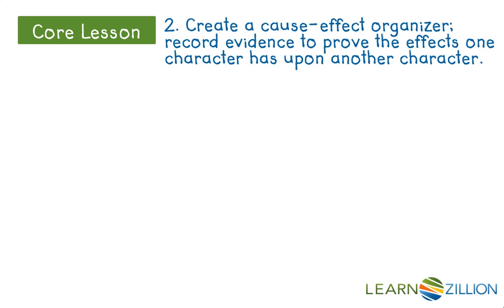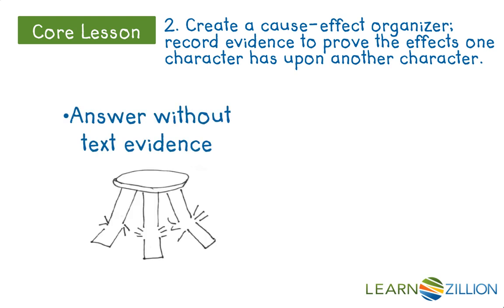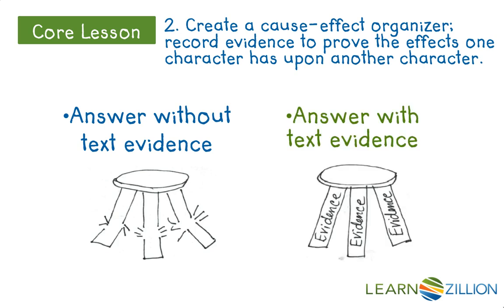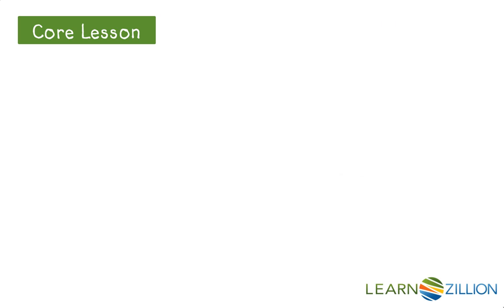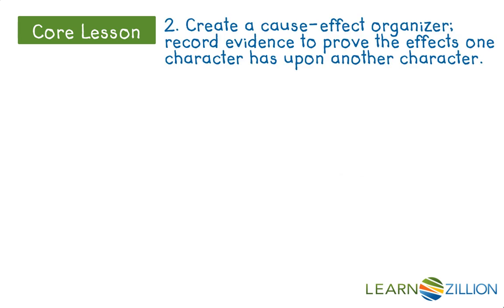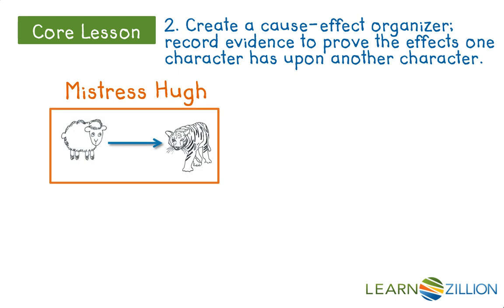Now that we found all of these pieces of evidence about what happened as a result of Mistress Hugh's change of character, we're ready to move to step two — creating a cause-effect organizer and recording evidence to prove the effects one character has upon another. It's important to remember that an answer without text evidence is like a stool with broken legs — it's not very good. An answer with text evidence is reliable and we can feel confident in it.